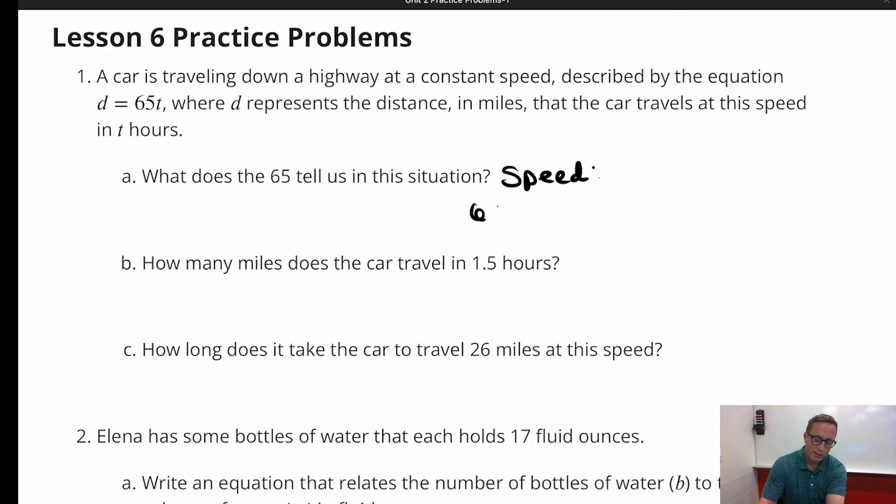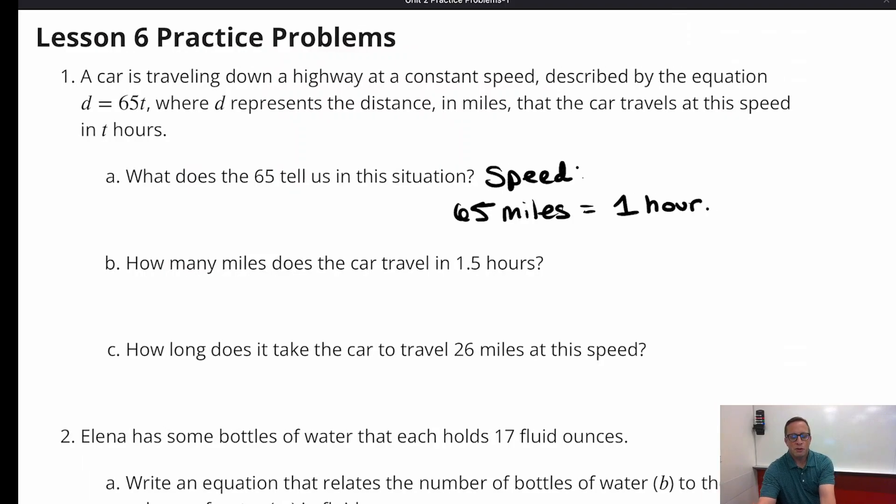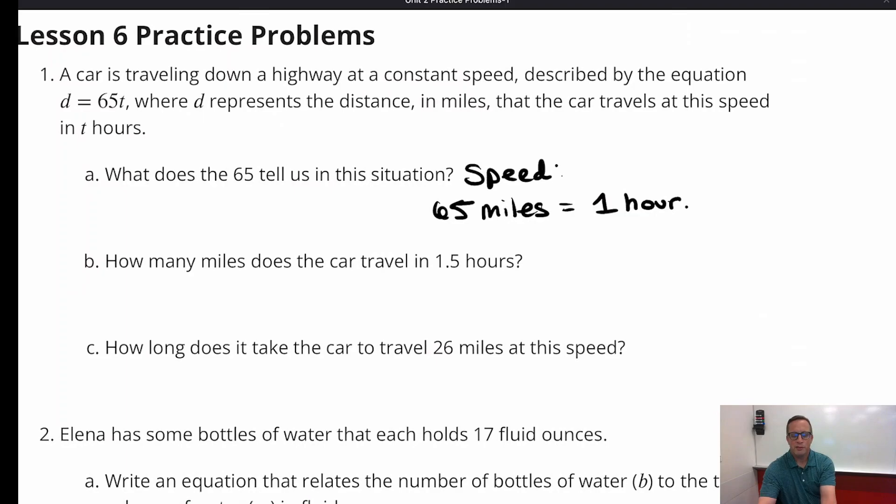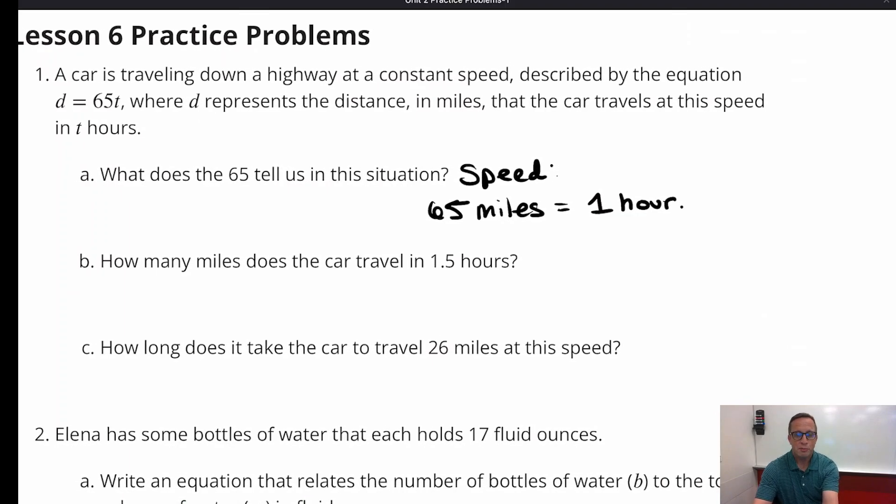It's going 65 miles every one hour, which is how, you know, if you're ever talking about cars and you're talking about how fast you're going, everybody gives it in miles per hour, unless you're from Europe and you just use kilometers per hour. But in America we're backwards, we use the opposite. We don't use the metric system. We should, but we don't.